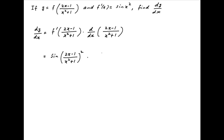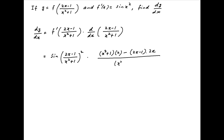The derivative with respect to x of (2x - 1)/(x² + 1) is equal to [(x² + 1) times the derivative of the numerator, which is 2, minus (2x - 1) times the derivative of the denominator, which is 2x] divided by (x² + 1)².